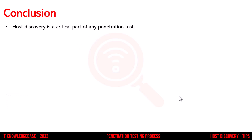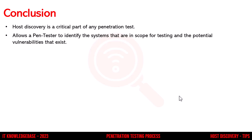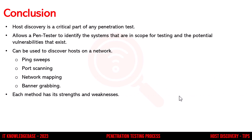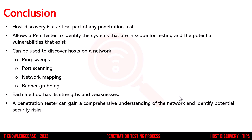Host discovery is a critical part of any penetration test. It allows a tester to identify the systems that are in scope for testing and the potential vulnerabilities that exist. Several methods can be used to discover hosts on a network including ping sweeps, port scanning, network mapping and banner grabbing. Each method has its strengths and weaknesses, and the choice of method will depend on the specific requirements of the test. By using these methods, a pen tester can gain a comprehensive understanding of the network and identify potential security risks.